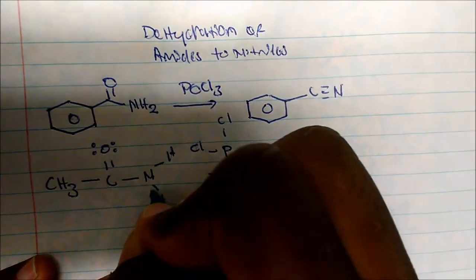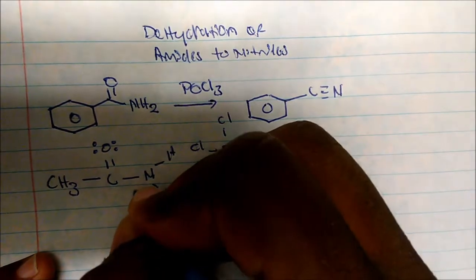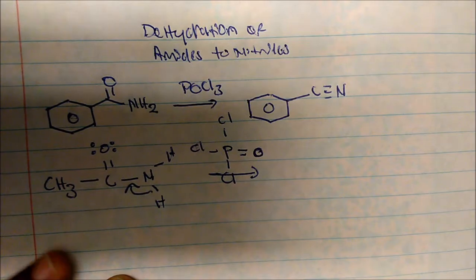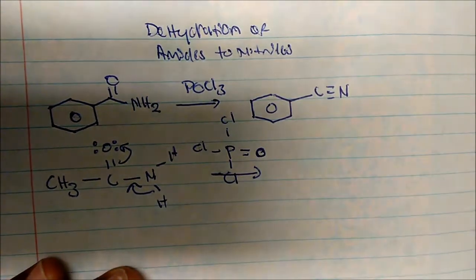So in the first step of the mechanism, what's going to happen is that these bonds that are adjacent, that are bonded to the nitrogen, will come in, form a double bond. And once it forms a double bond, these pi electrons here are going to kick off on the oxygen.